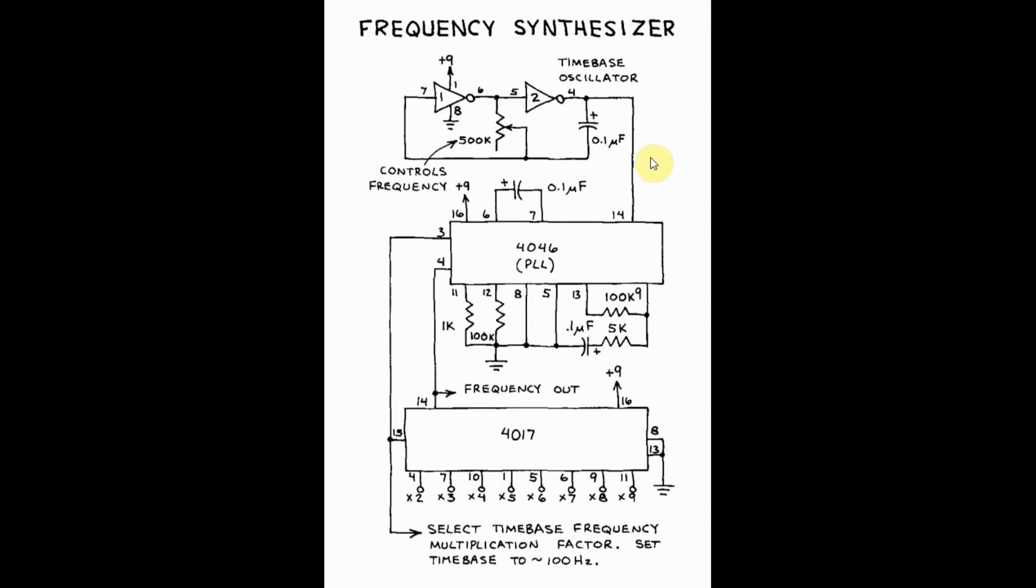The time-based oscillator clock signal is applied into the signal input of the PLL. The VCO output of the PLL is used as a clock signal to drive the decade counter 4017. One of the decoded outputs, which is used as a select time-based frequency multiplication factor, is fed back into the comparator input of the phase locked loop. And the VCO output would be a signal whose frequency is a multiplication factor of the time-based frequency.